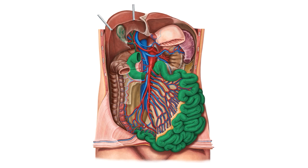The lymph nodes of the small intestine are one of the largest groups of lymph nodes in the entire body and are important in both the immune system and the lymphatic system. They are also very important clinically as they can be involved in the spread of infections and cancers. Therefore, having a knowledge of normal lymphatic drainage will allow you to better understand the potential spread of certain pathologies.